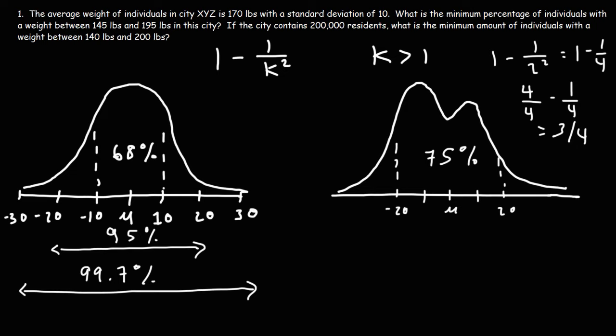For a normal distribution using the empirical rule, 95% of the data lies within two standard deviations of the mean. Compare these two distributions in terms of how you calculate the percentage of values that lie within a certain number of standard deviations of the mean.